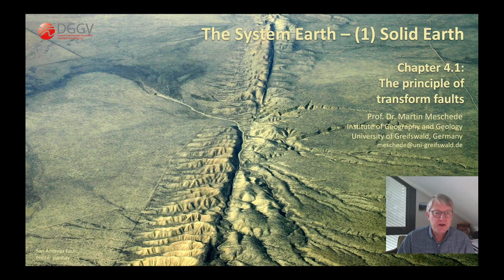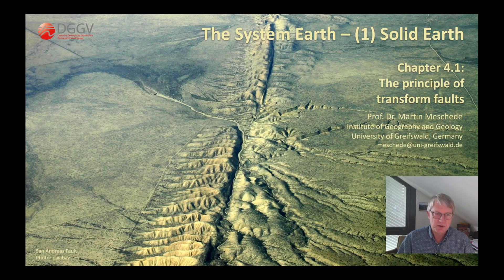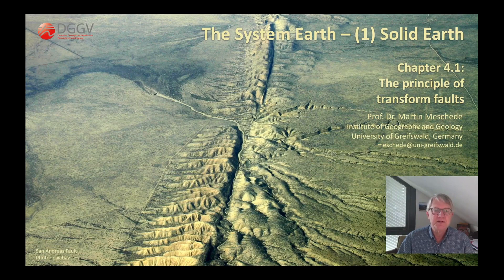Of course, there are also many strike-slip faults in subduction zones and orogenic formations, but they are different from transform faults because they cannot be defined as clearly, especially concerning the beginning and end. Transform faults are always connecting links between plate boundaries. That means the beginning and end of a transform fault is clearly defined, namely where the strike-slip movement is transformed into a diverging or converging movement — hence the name transform fault.